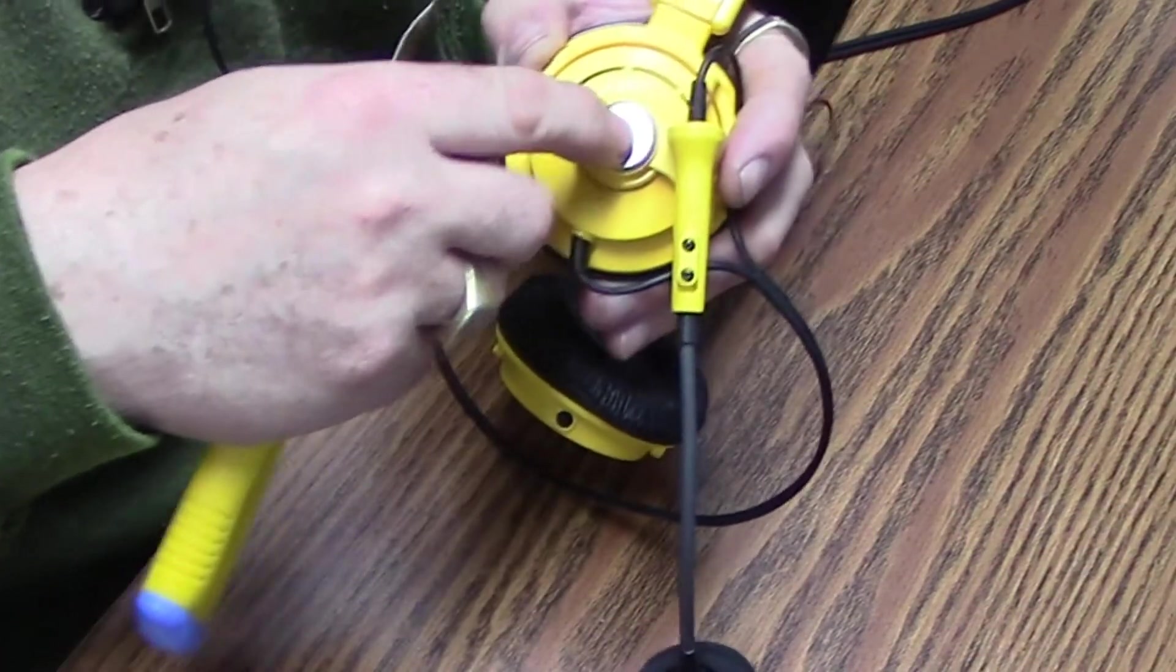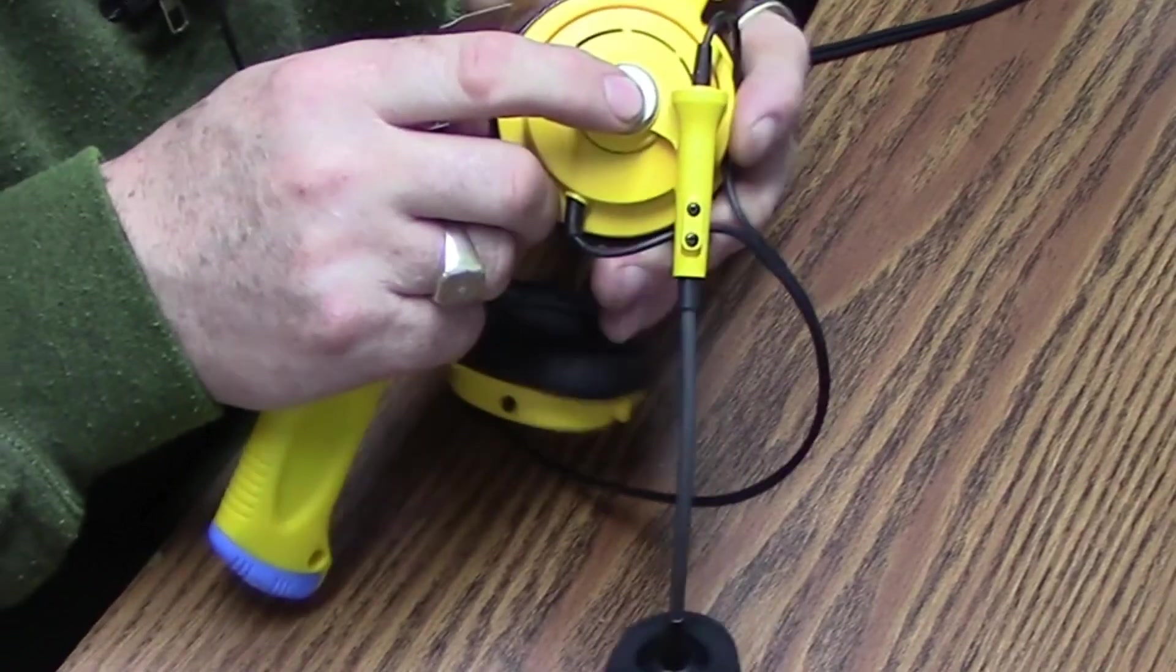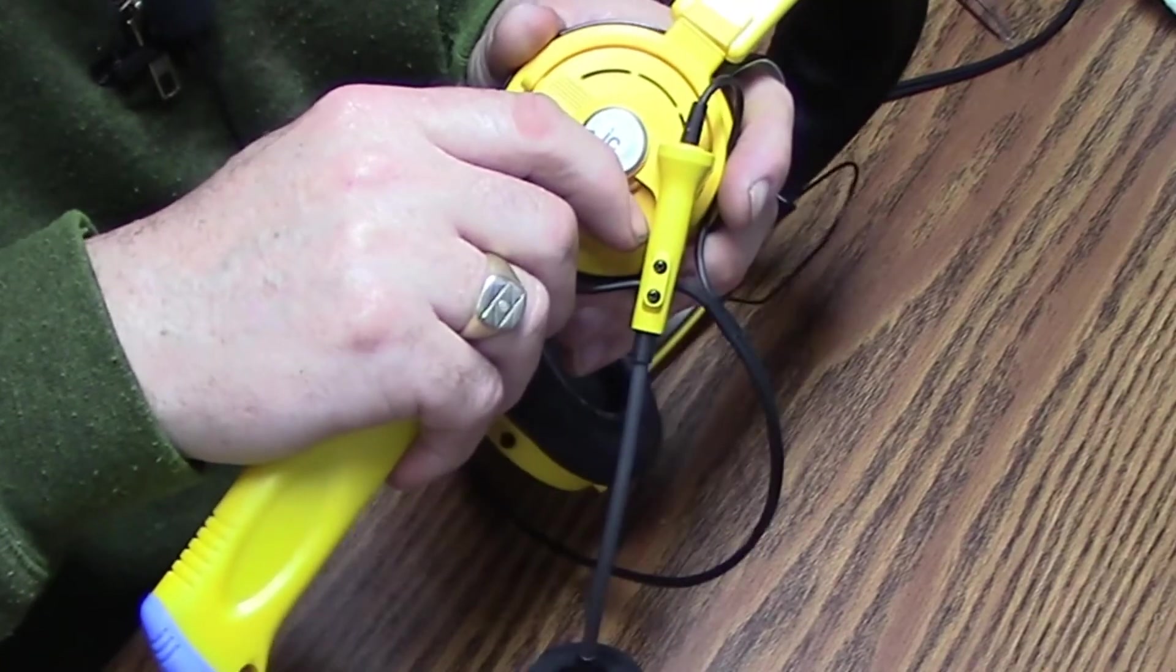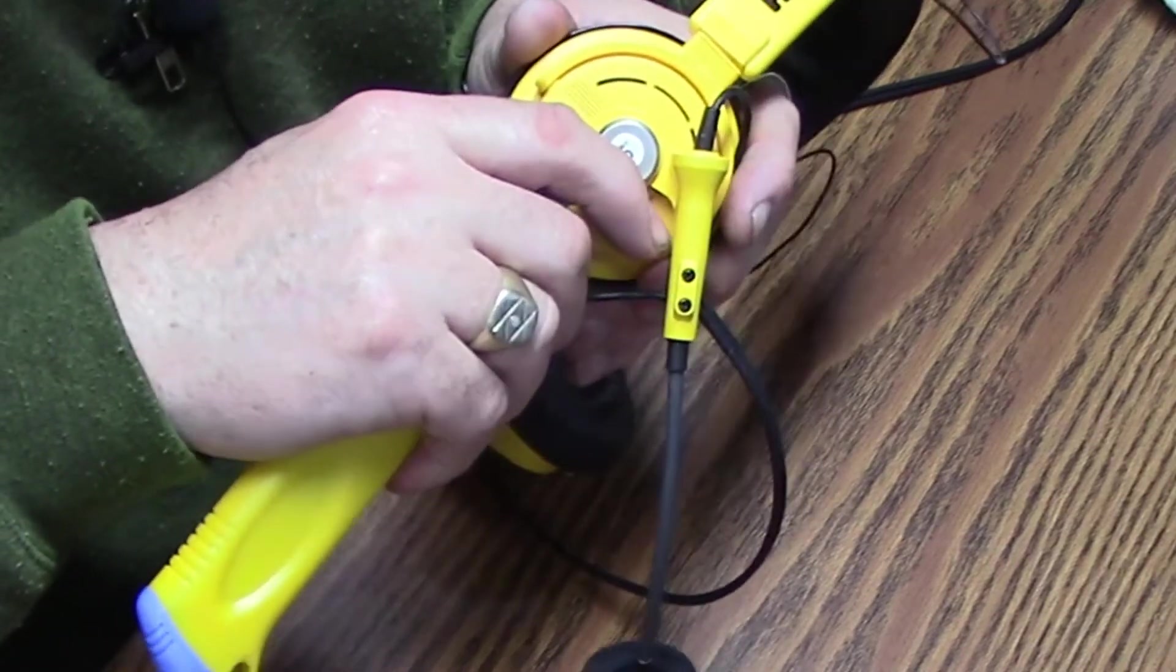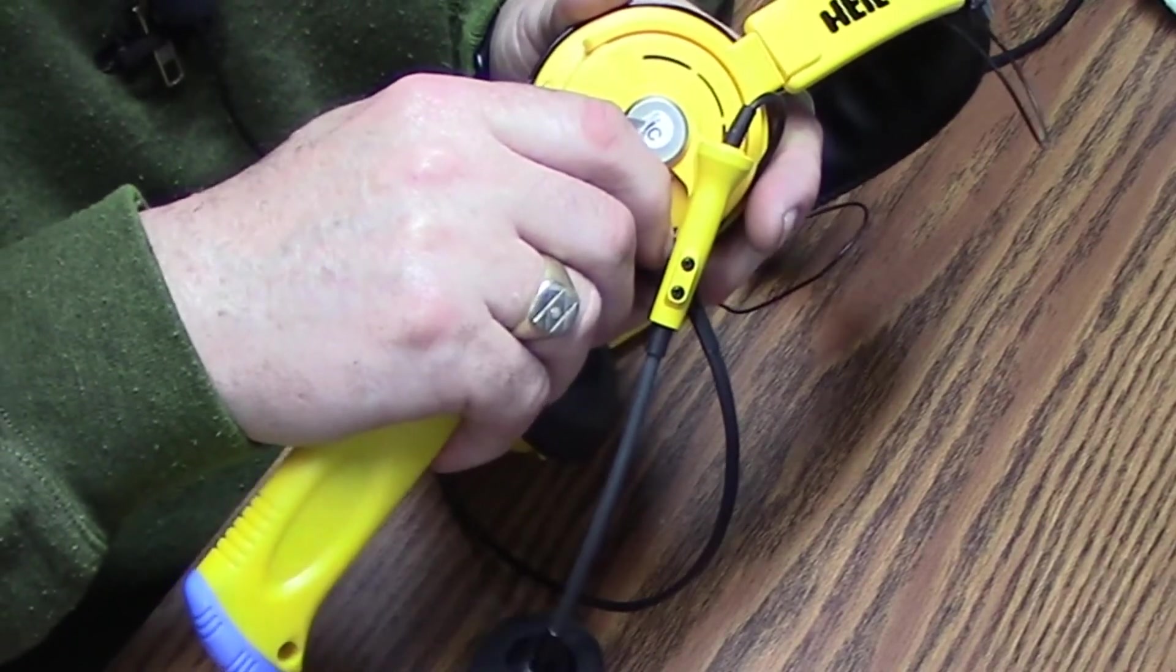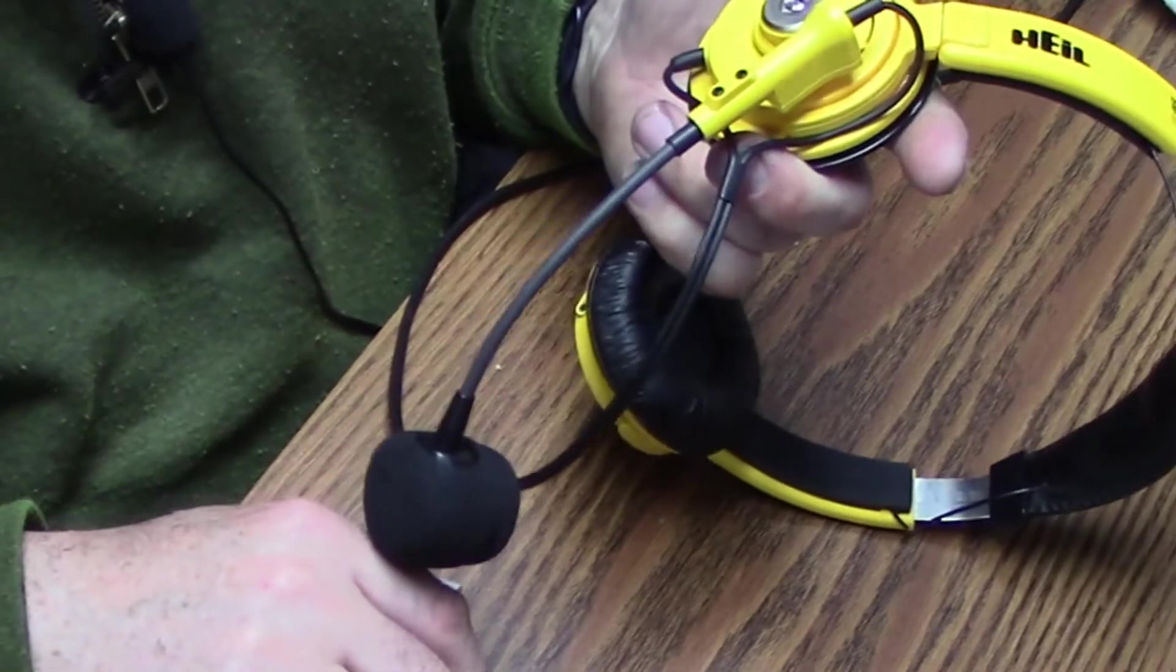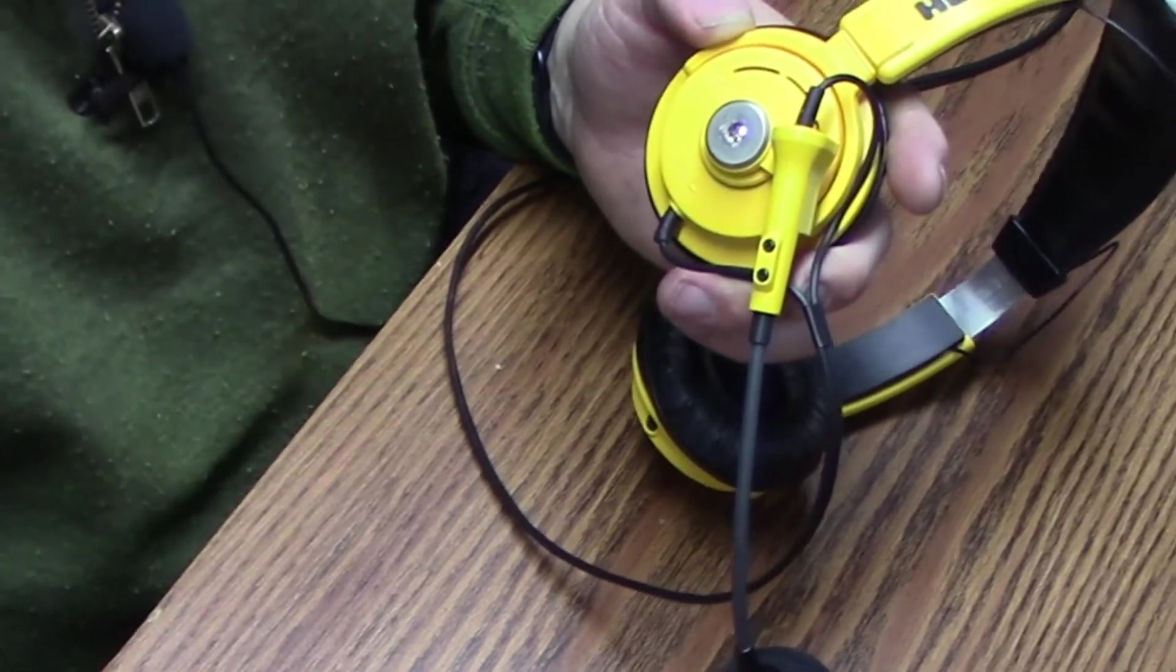I can feel actually in the center there under that IC, I could actually feel a dimple, so I wouldn't mind betting there's a screw under there. Let's have a little look. Ordinarily I would warm this up with a hot air gun, but I'm not worried.